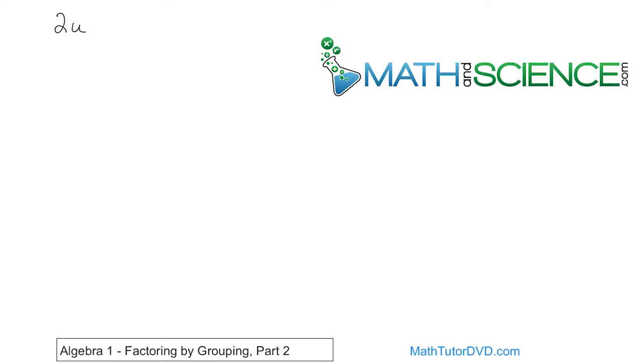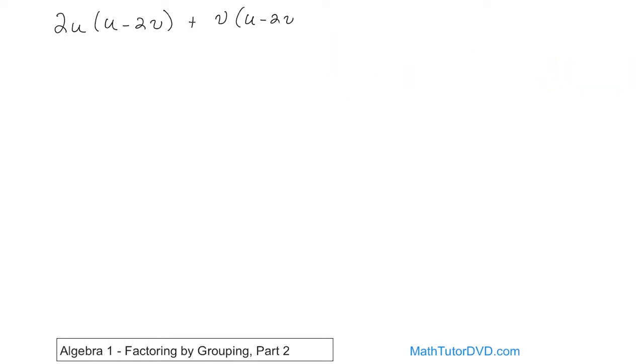What if you have 2u times (u - 2v) plus v times (u - 2v) plus (u - 2v)?